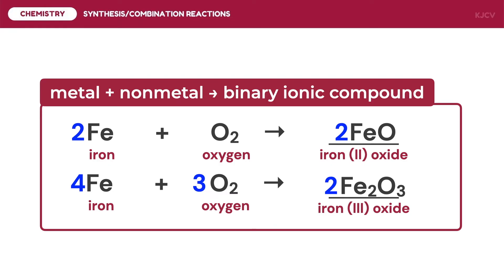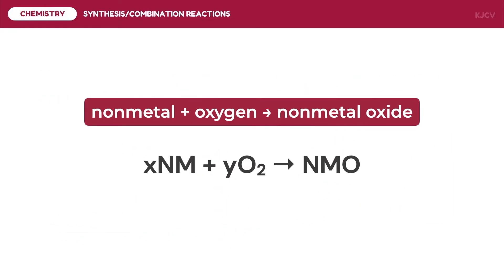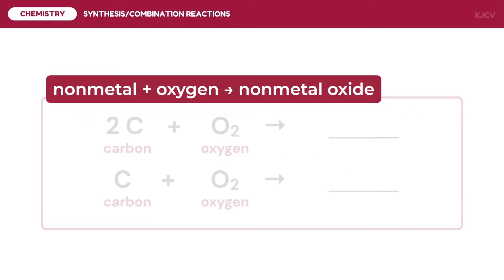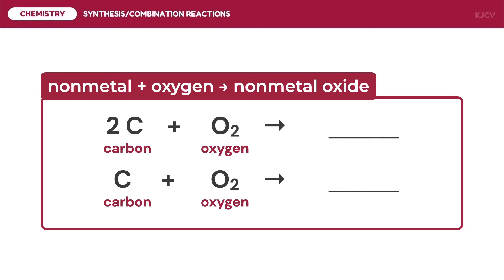The second synthesis reaction is the reaction between a non-metal and oxygen to form a non-metal oxide, producing a covalent compound. For covalent compounds we consider the ratio of non-metal elements in the compound. For example, 2 moles of carbon reacting with 1 mole of diatomic oxygen gives a 2-to-2 ratio, but since dicarbon dioxide is not a valid compound, the product is 2 moles of carbon monoxide.